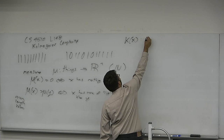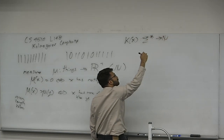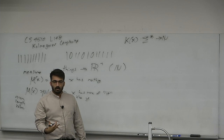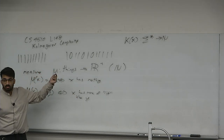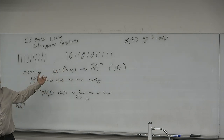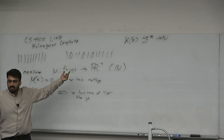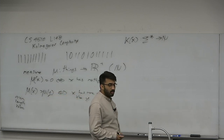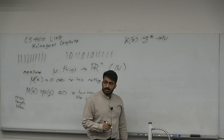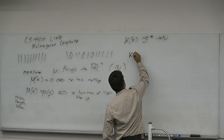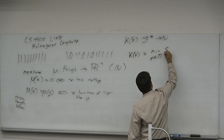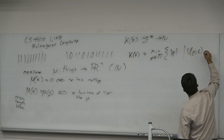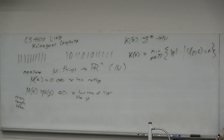We define K(x) as the minimum over all programs p in the set of all programs, minimizing the length of p, such that a universal simulator given the program with no input outputs x. Find the smallest program such that when you give it to a universal Turing machine with the empty string as input, it prints x.